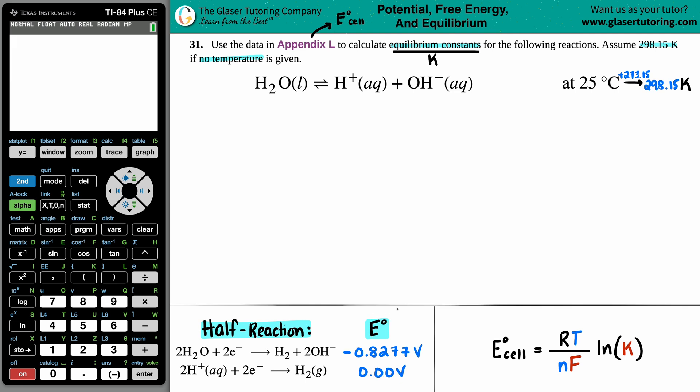What equation can I link between cell potentials or E cells with equilibrium constants? And that's this equation right here. Here is the equilibrium constant that I want to solve for, but there's five other variables: R, T, N, and F, and then the E cell value.